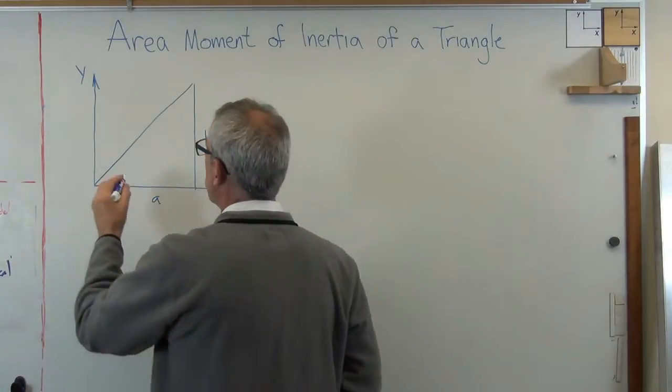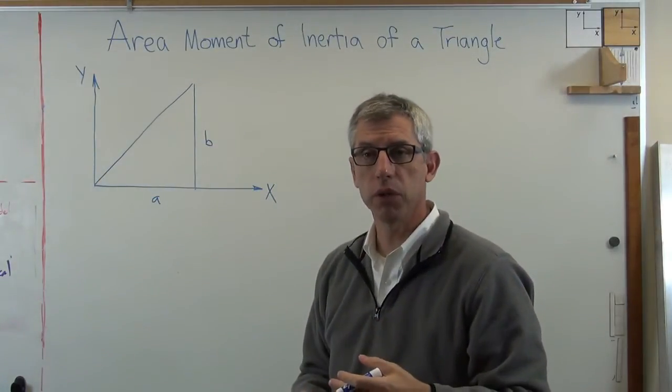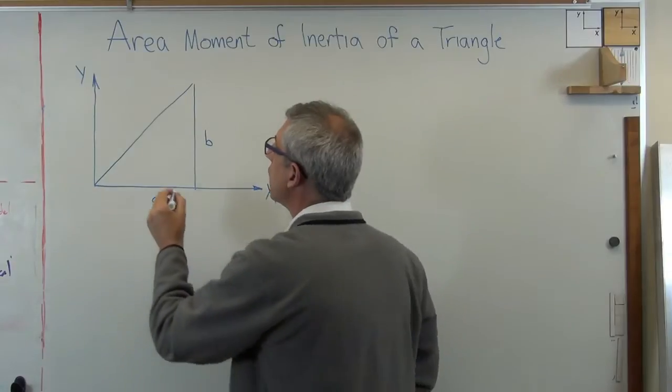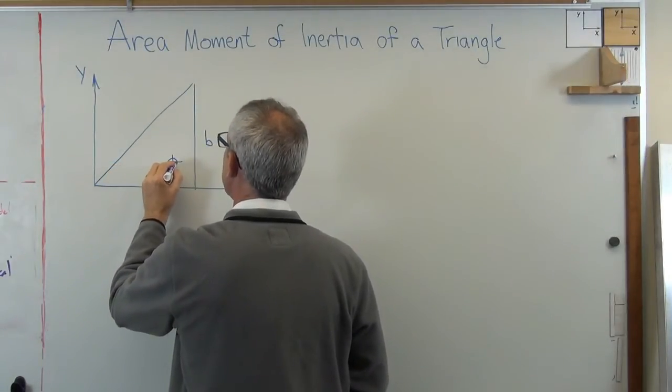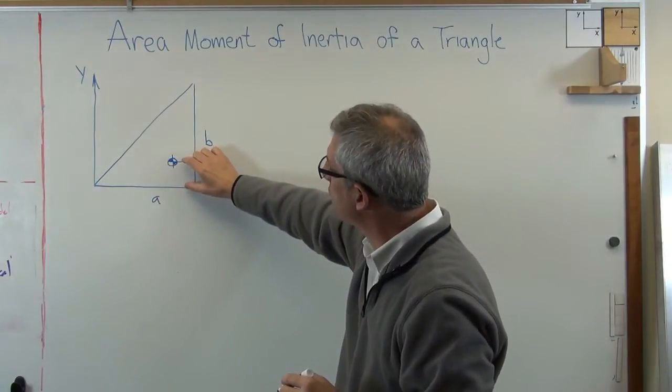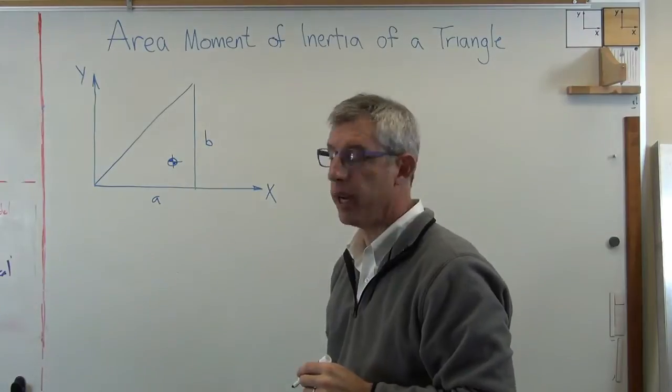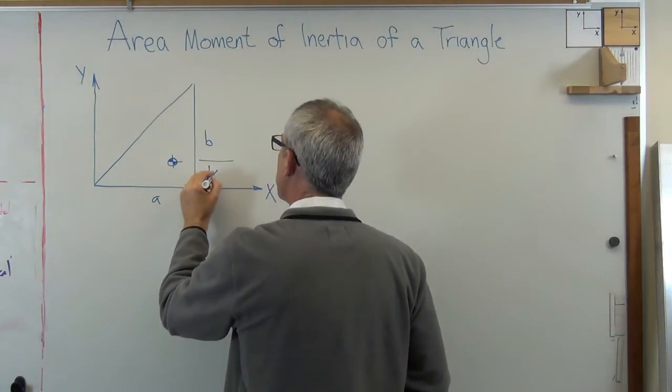We've got to know what point about which we're calculating the area moment of inertia. So we're going to calculate the area moment of inertia about the centroid of the triangle, which is one-third of the way up from the top and one-third of the way in from the side. So the height right here is B over 3.